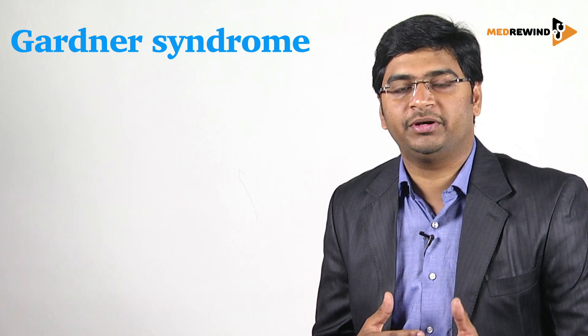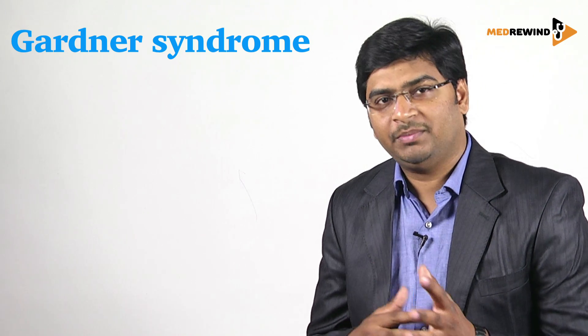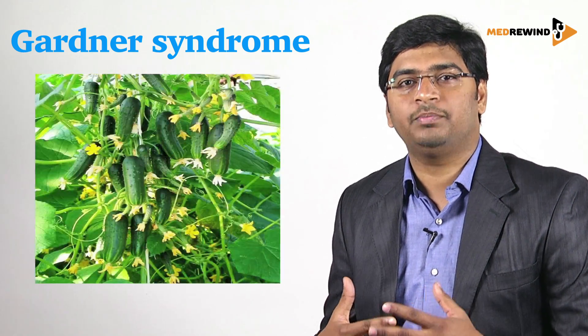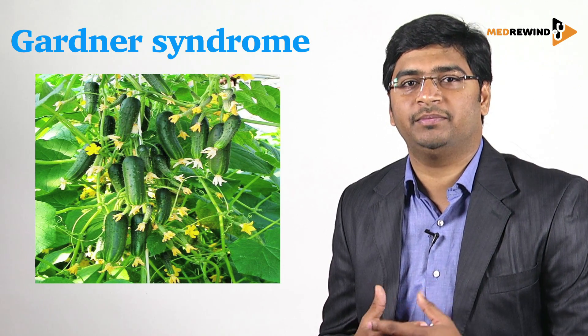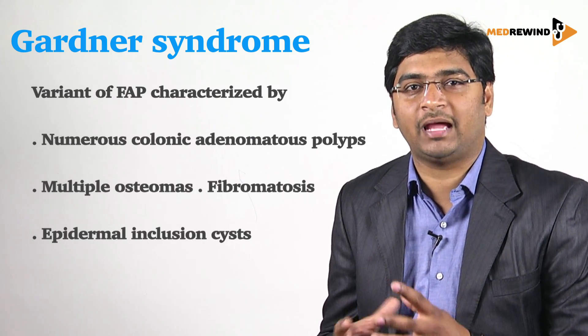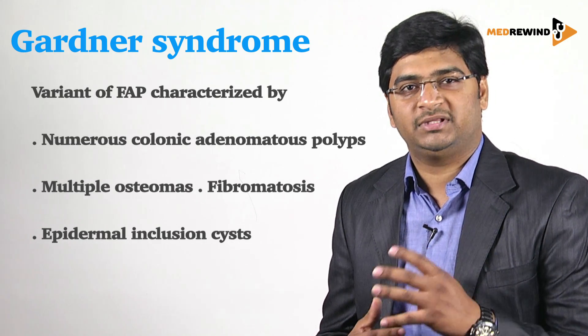For Gardner syndrome, another component of FAP, remember it by imagining a garden full of vegetables. A garden has long polyps that can be remembered like long tubular cucumbers, mandibular osteomas remembered like cauliflower or cabbages, and frontal osteomas like a multi-layered cabbage.